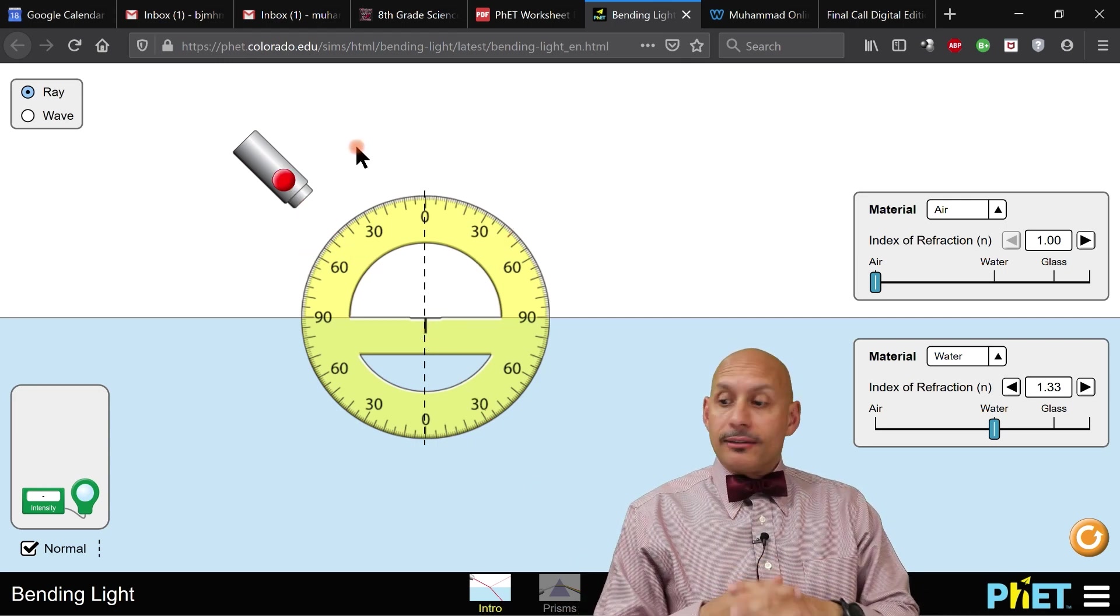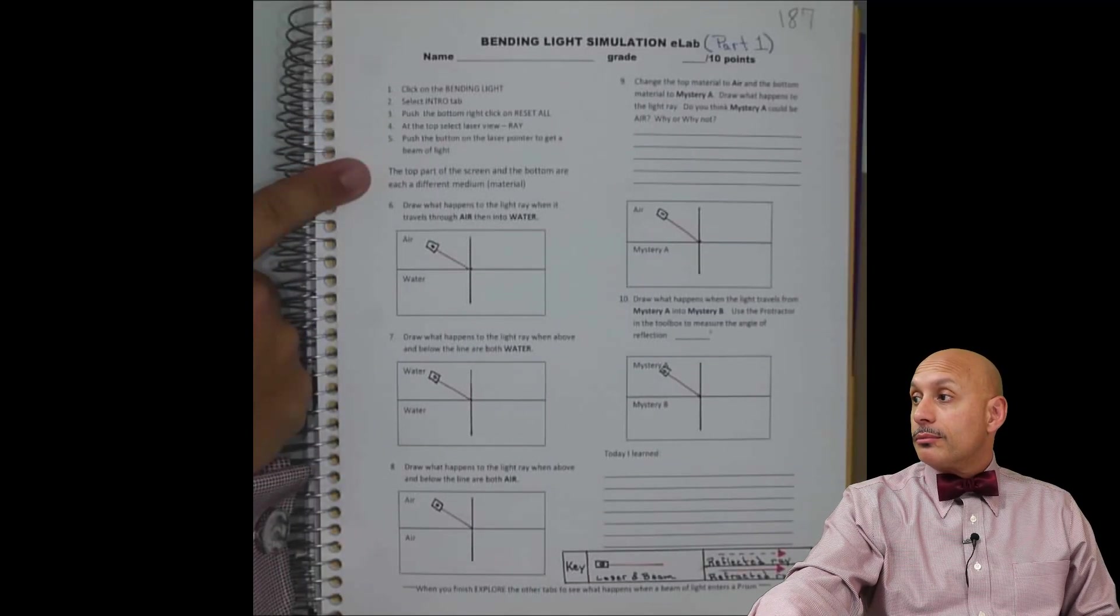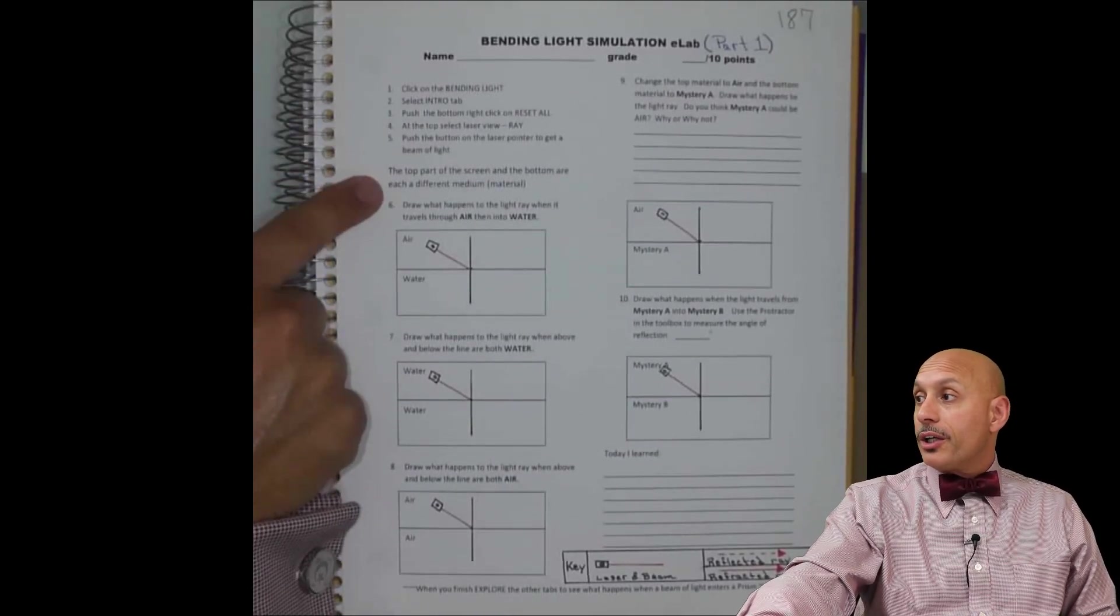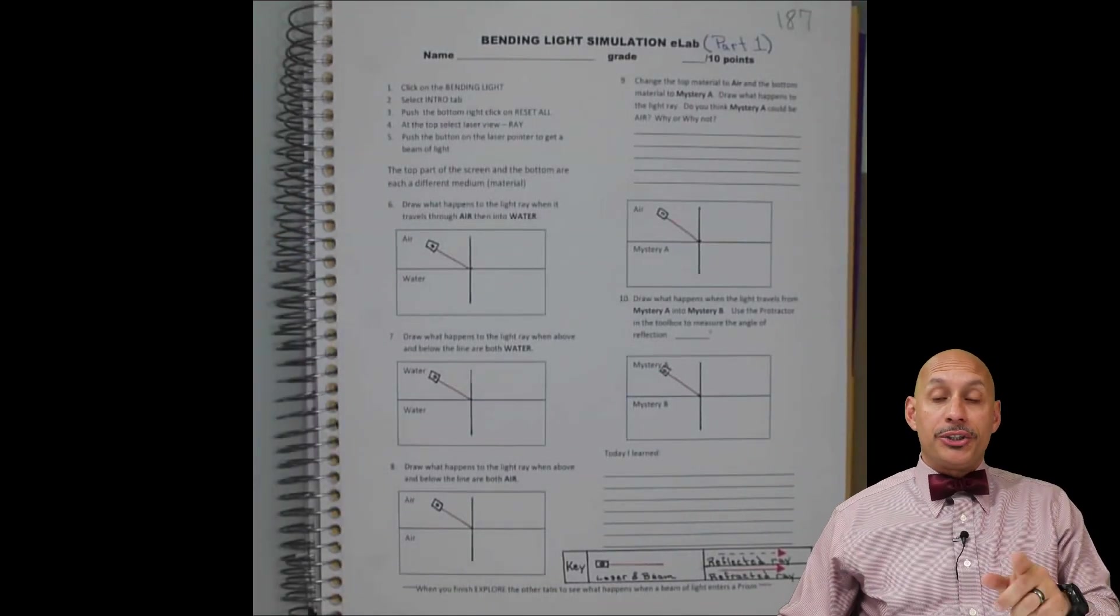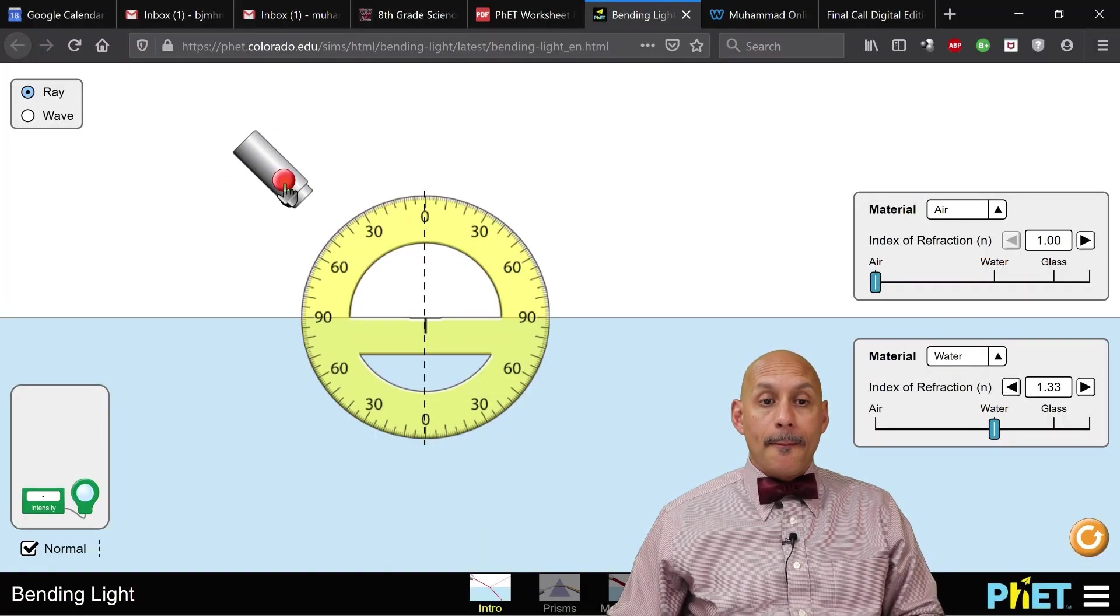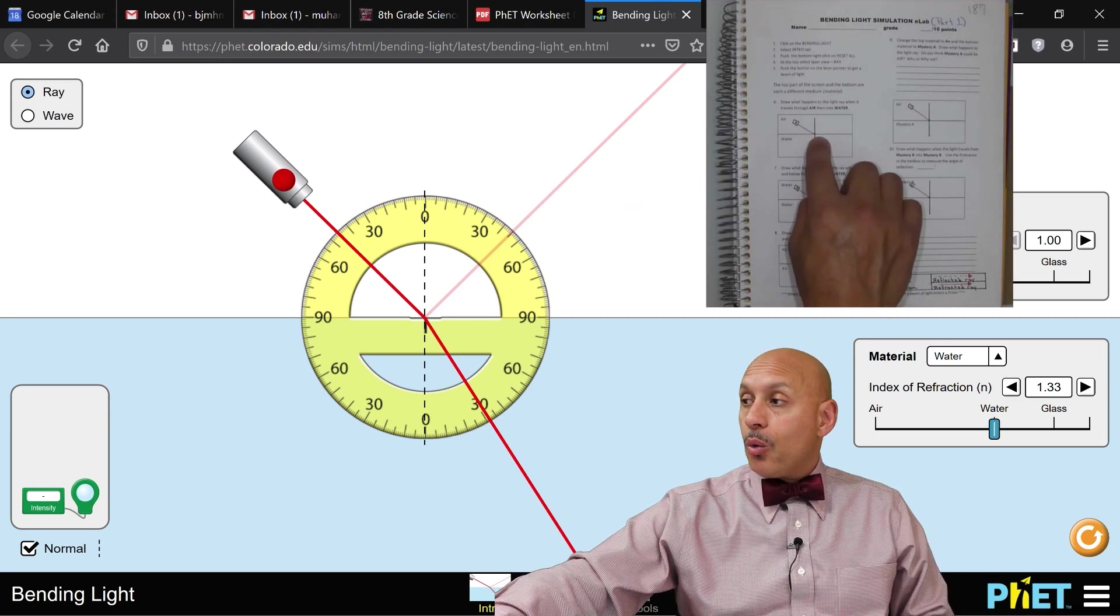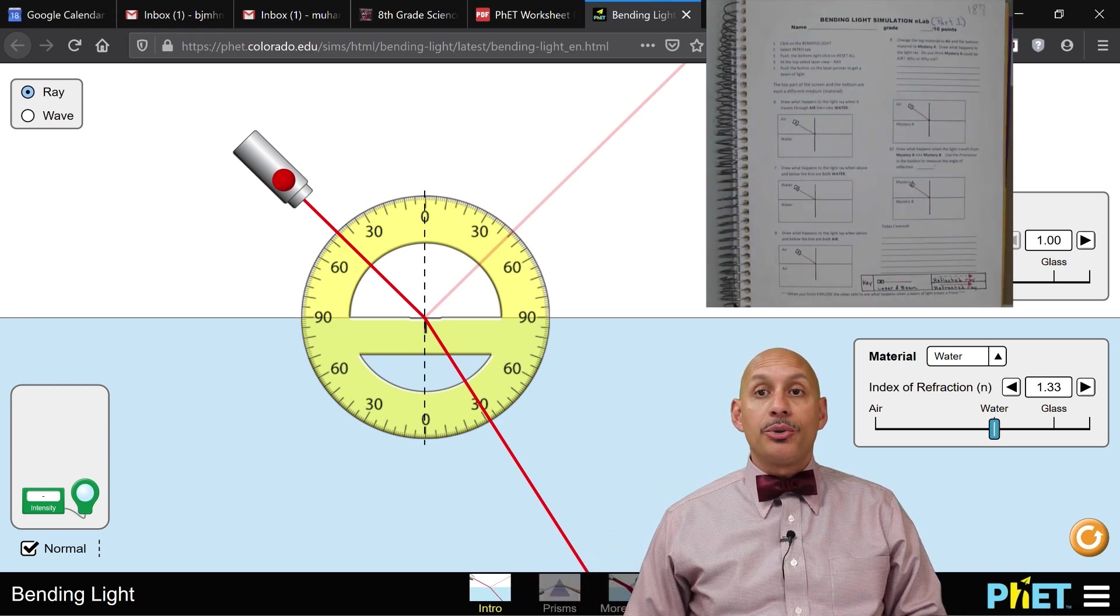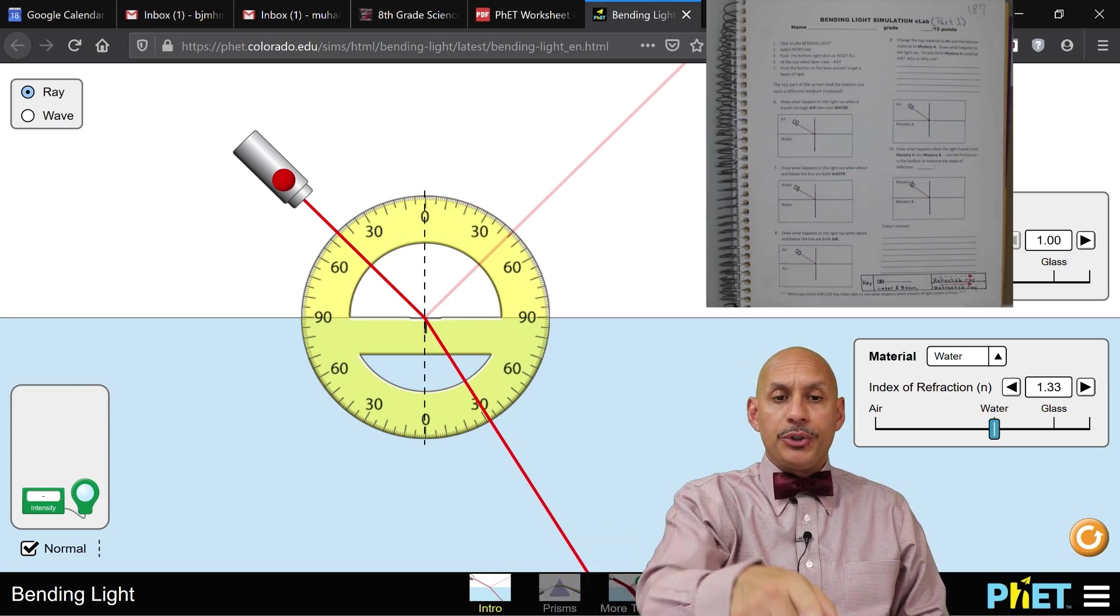Once you've done that, then all you need to do is just go step by step and follow the instructions. So one through five are instructions. Number six, they're showing you this is air, this is water. You need to make sure and verify, do you have air here, do you have water here? And if so, you turn on the laser beam.